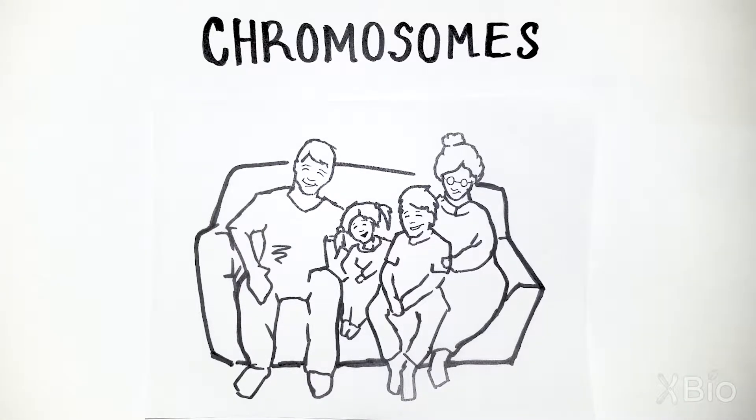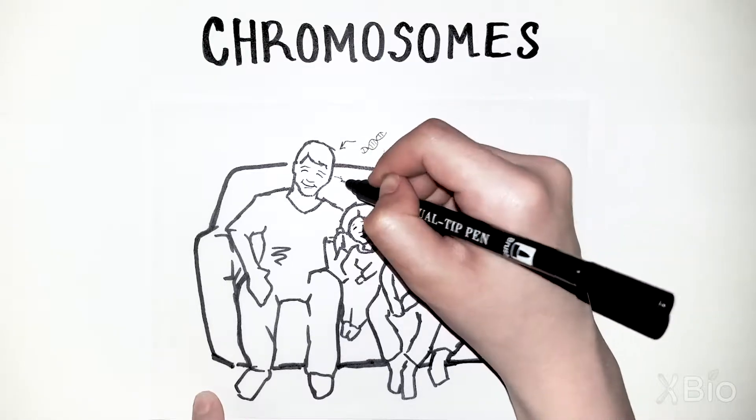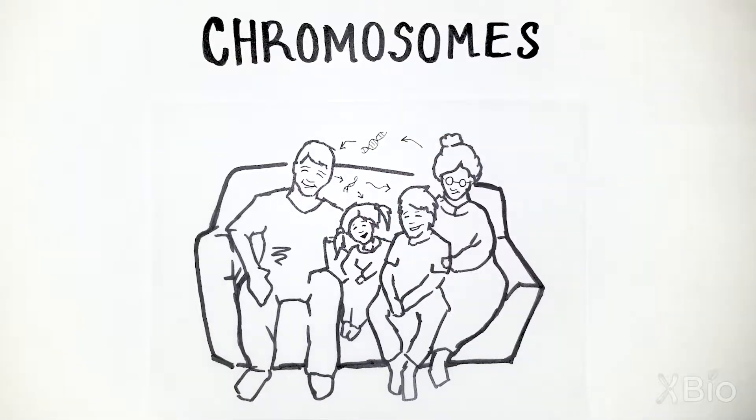DNA is the genetic material in every cell that is passed from generation to generation. Each cell has a lot of DNA, and it needs to be organized to make it easy to inherit.